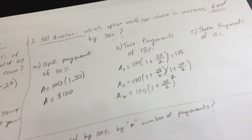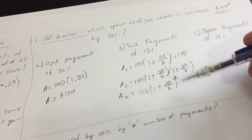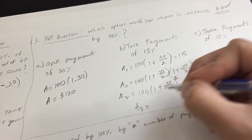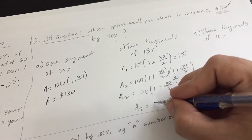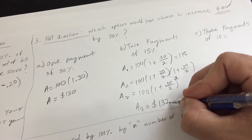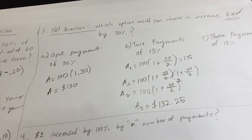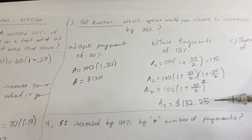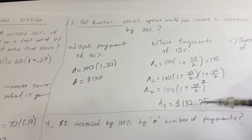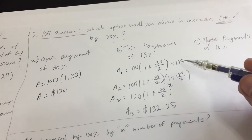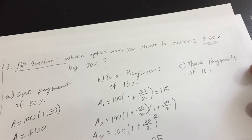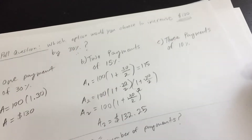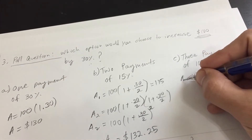That second amount — what we obtain from two payments of 15% — using the calculator gives us $132.25. Just by splitting into two payments, we increased our final amount by $2.25, because we're accumulating interest on our previous interest. You may know what that's called — I'll tell you the name soon. Let's explore the third option.